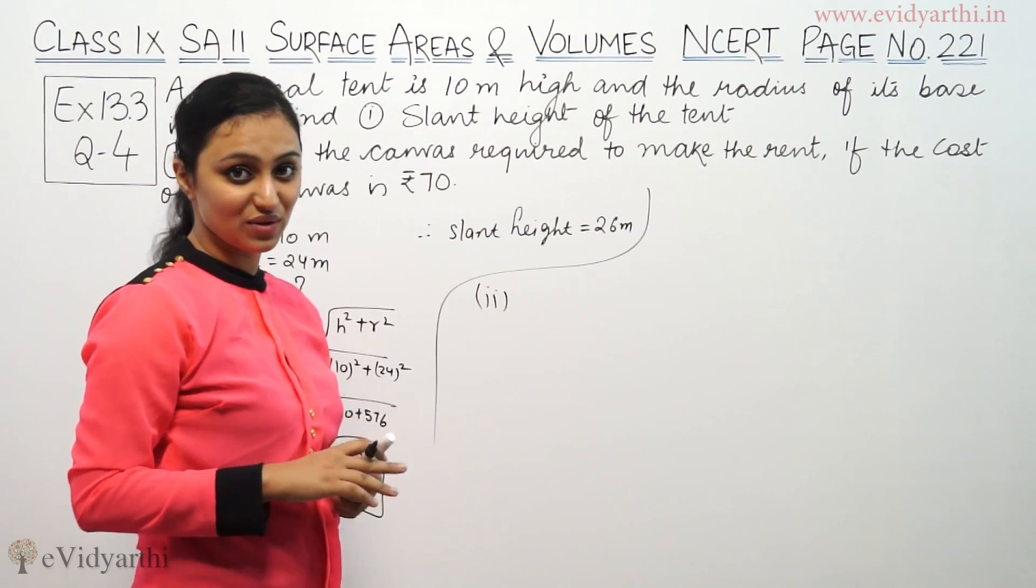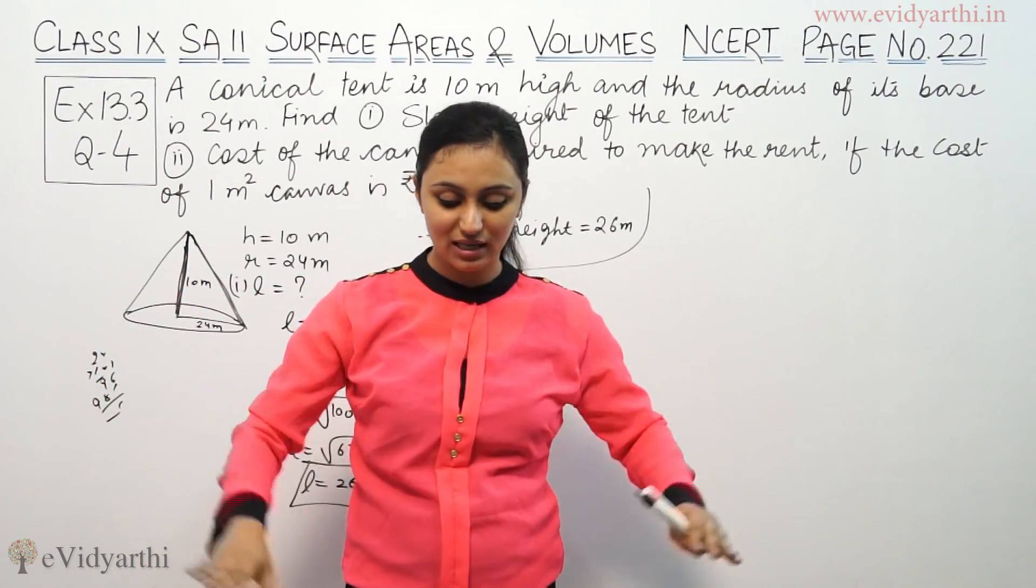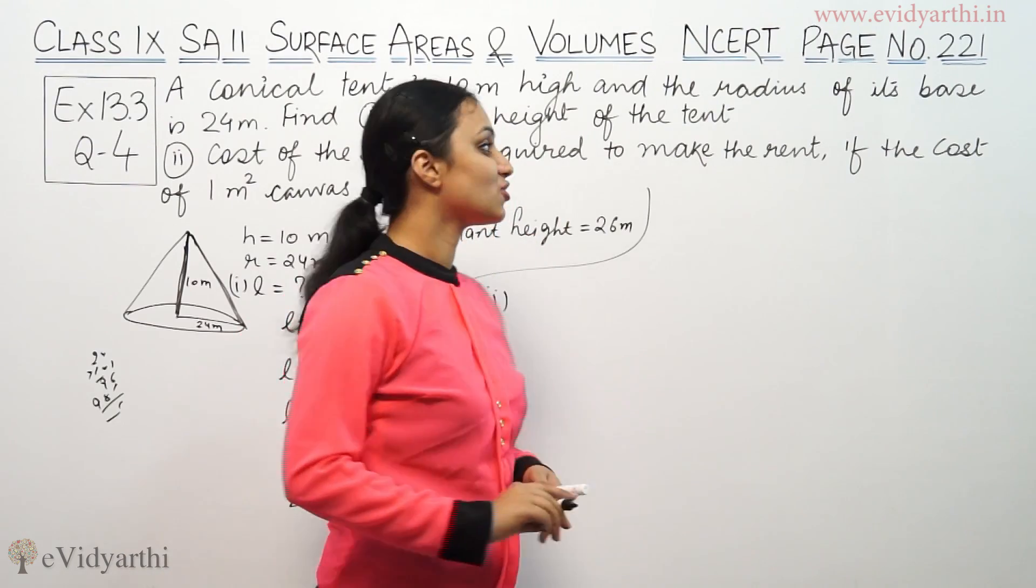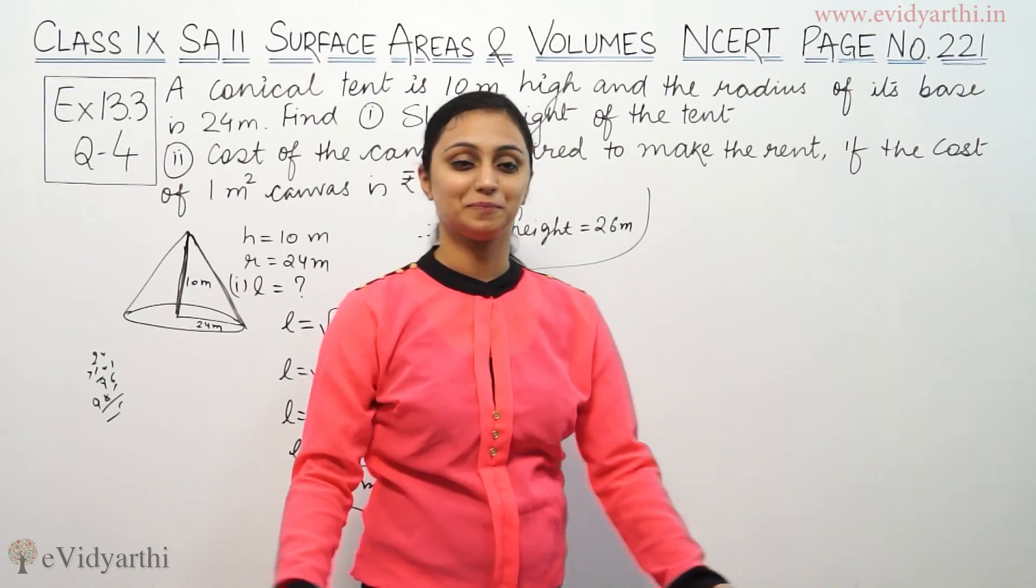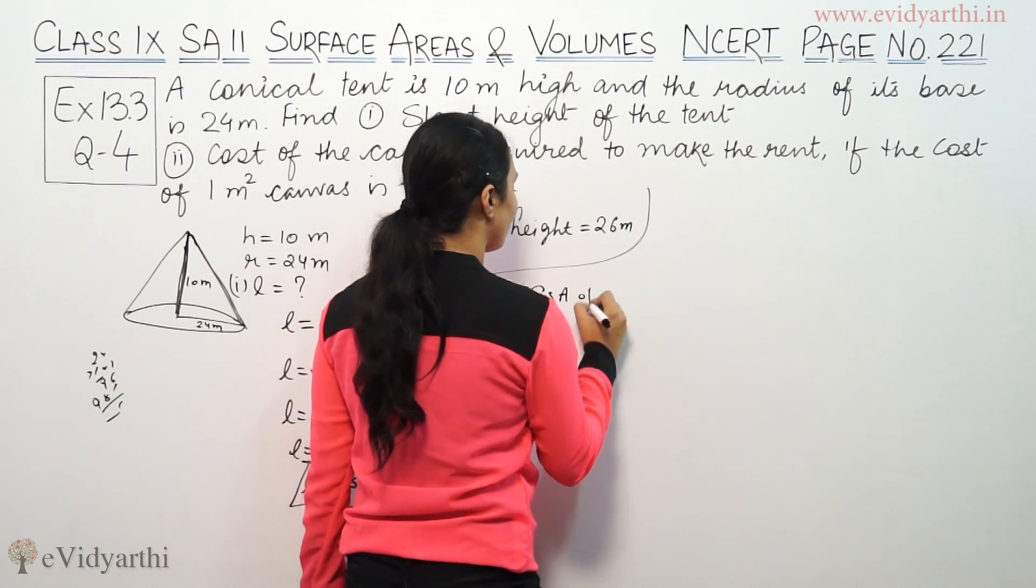We need the curved surface area, because when we put up a tent, there will be no bottom. When we talk about canvas for a tent, it will not cover the bottom, so we calculate the curved surface area of the tent.